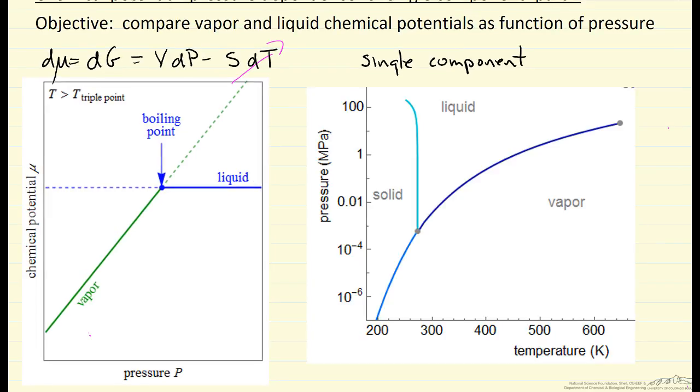So here on the pressure-temperature diagram, this point here is the triple point. Diagram on the left, the chemical potential, says we're at a temperature higher than the triple point.